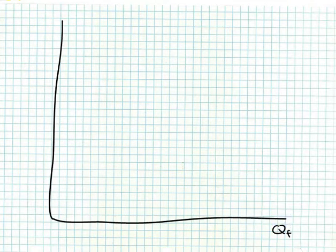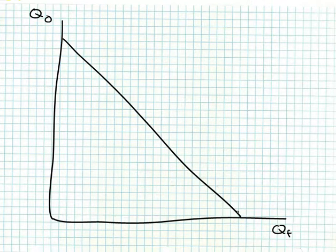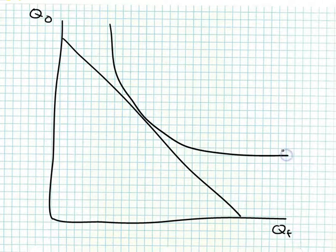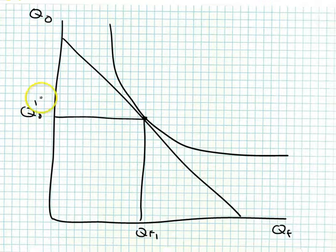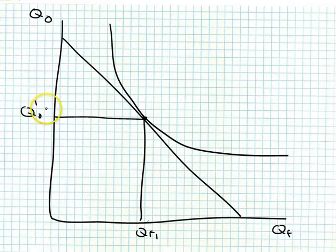We have quantity of food on the x-axis and quantity of other goods on the y-axis. At our original prices we have some indifference curve, some point of tangency — QF1 and QO1. This individual is in equilibrium at this quantity of food and this quantity of other goods.